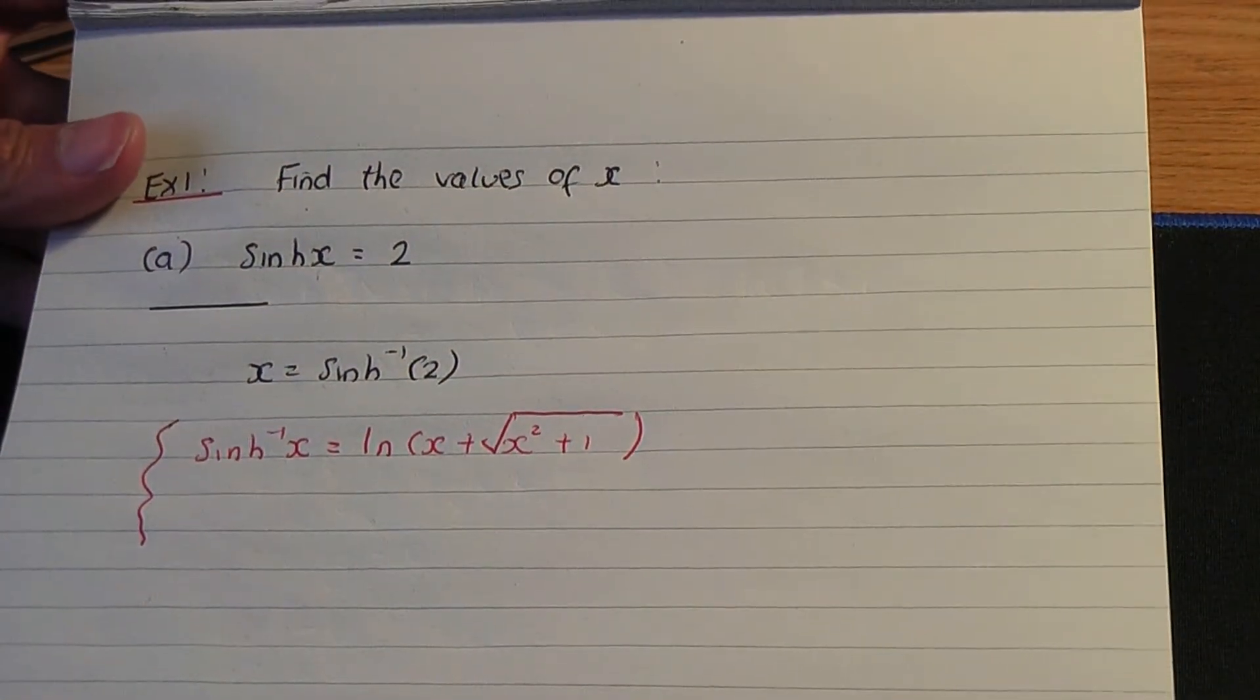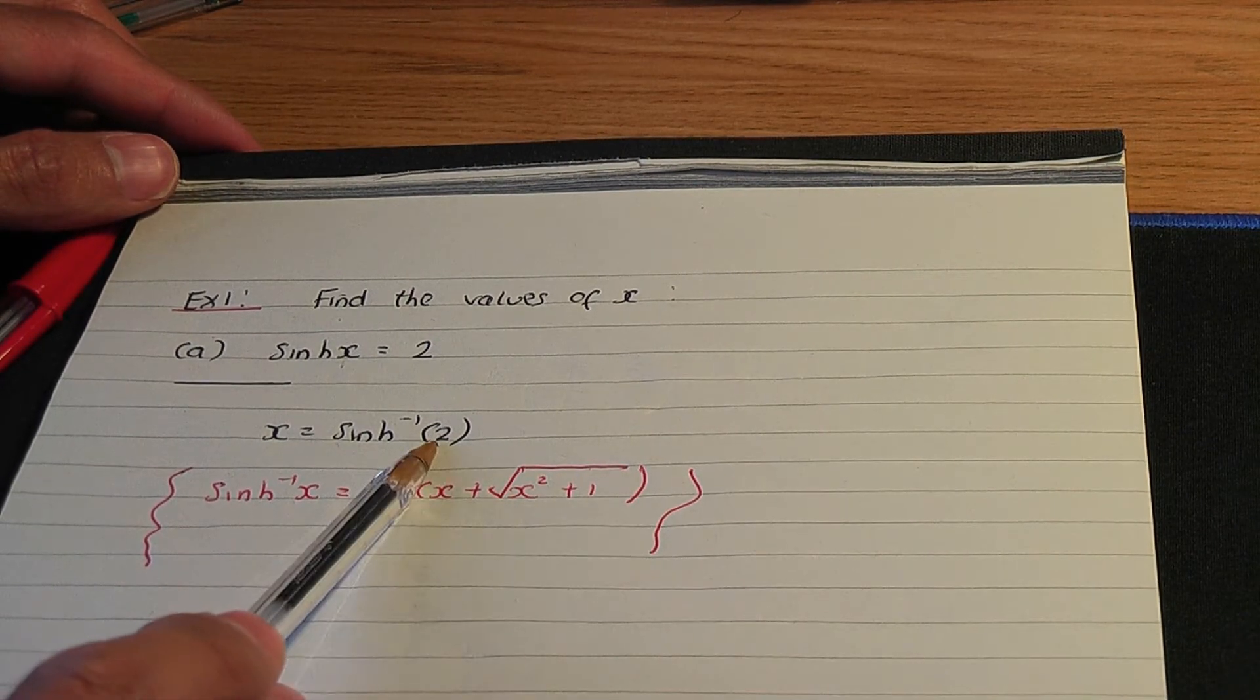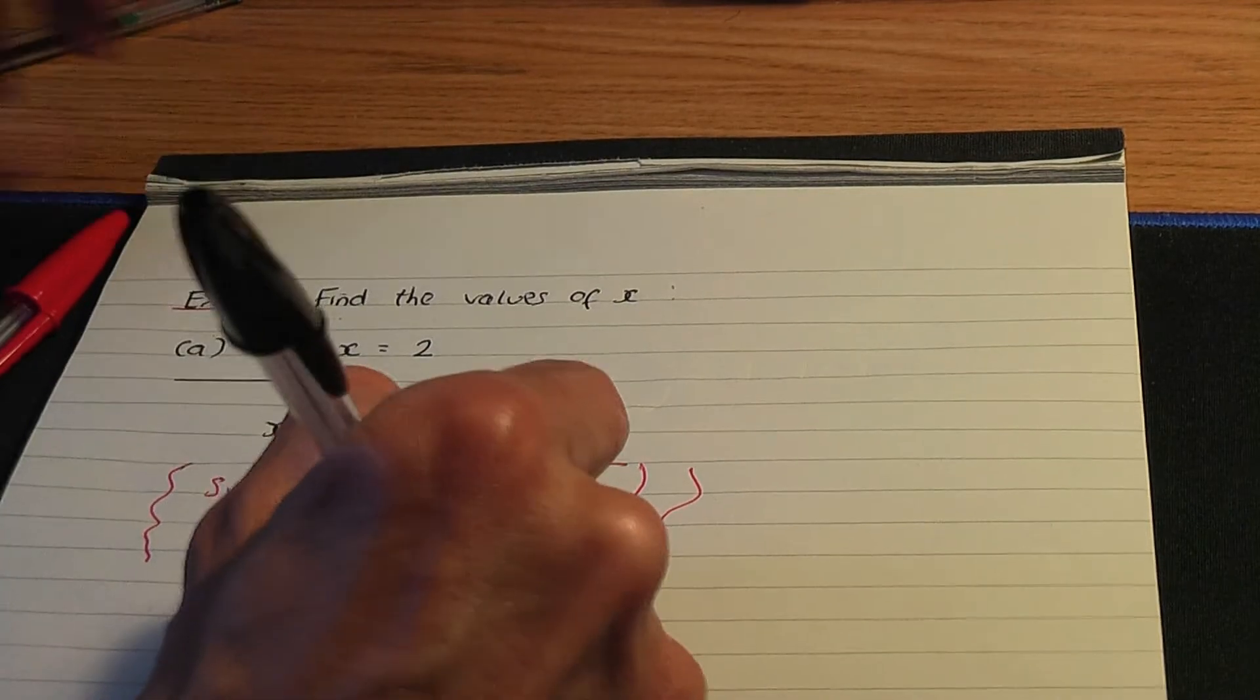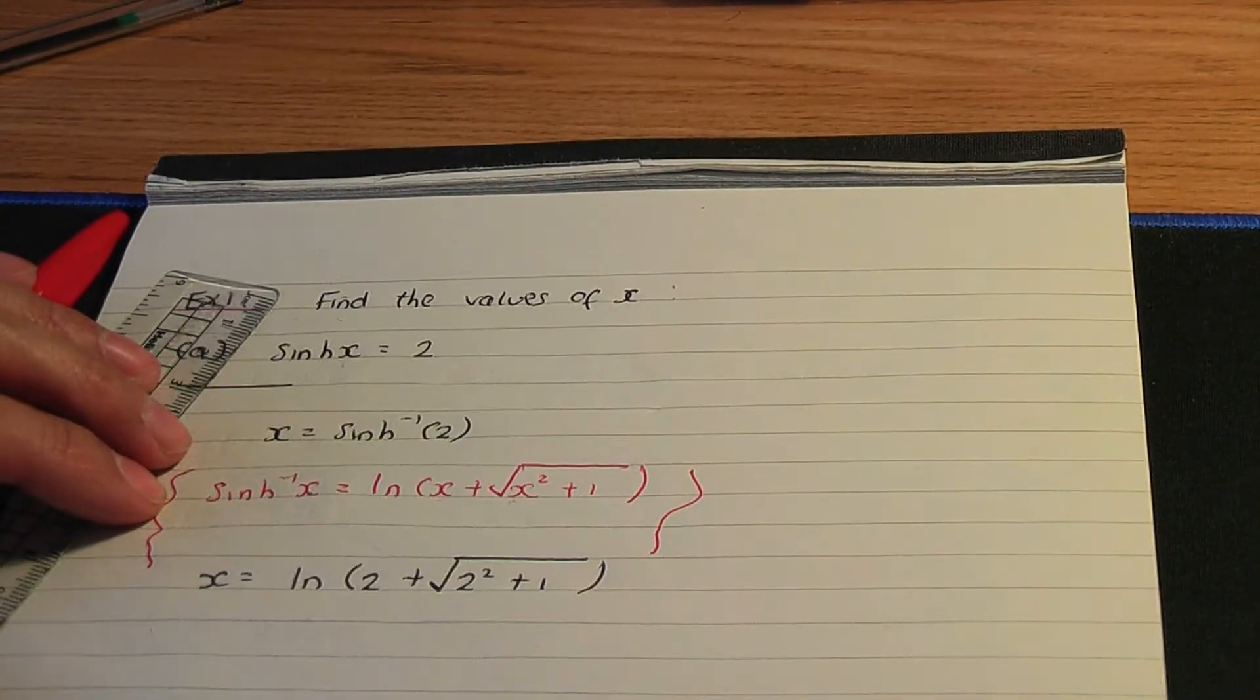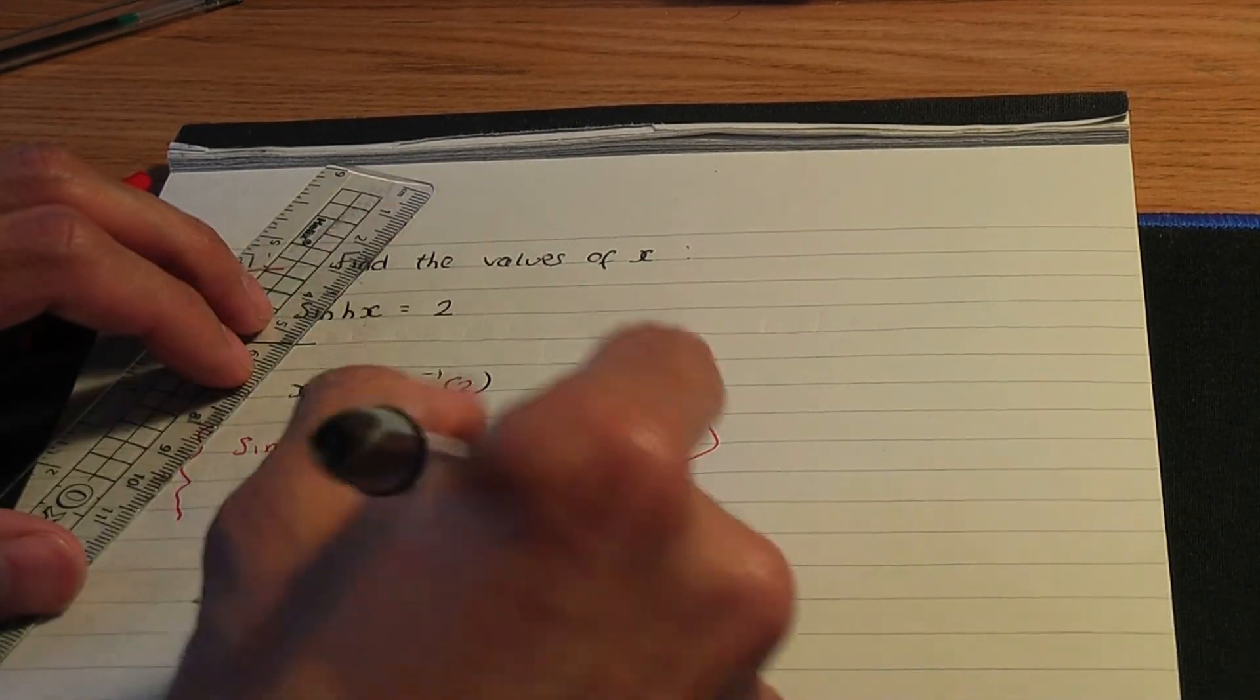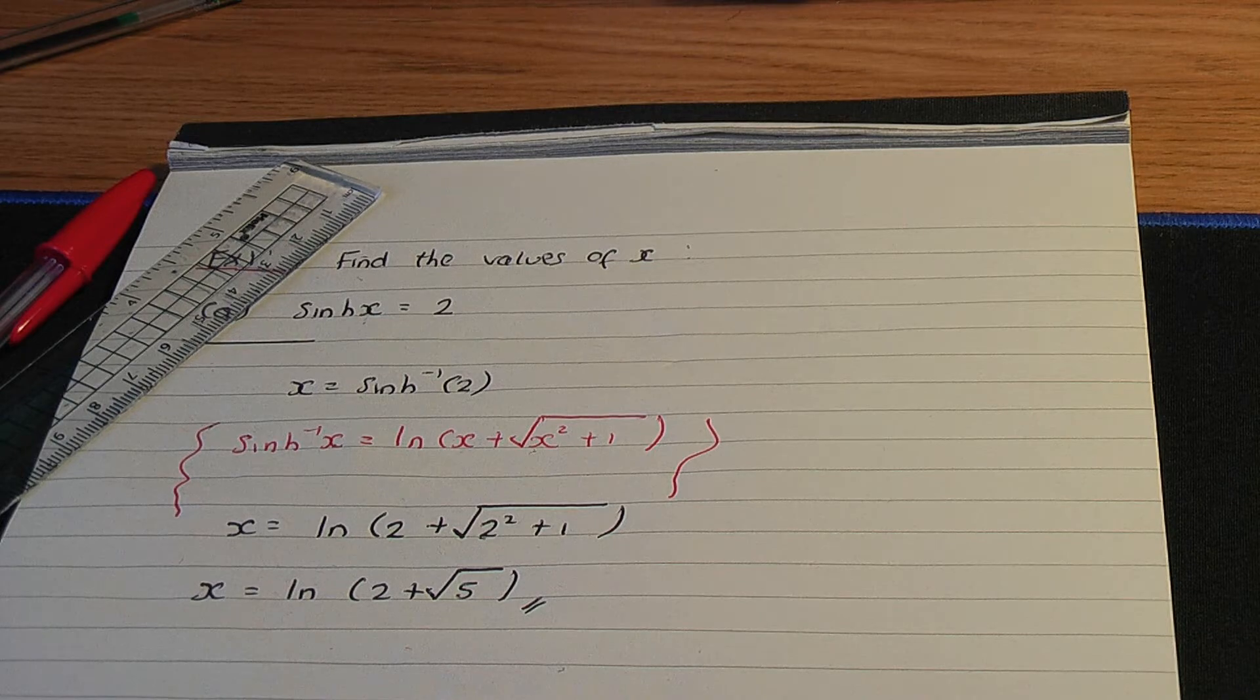That was the result for the inverse hyperbolic sine of x. So I'm going to use that result here to find the inverse hyperbolic sine of 2 by simply replacing the x's in the result by 2's. So x will be ln 2 plus the root of 2 squared, which is 4 plus 1 is 5.